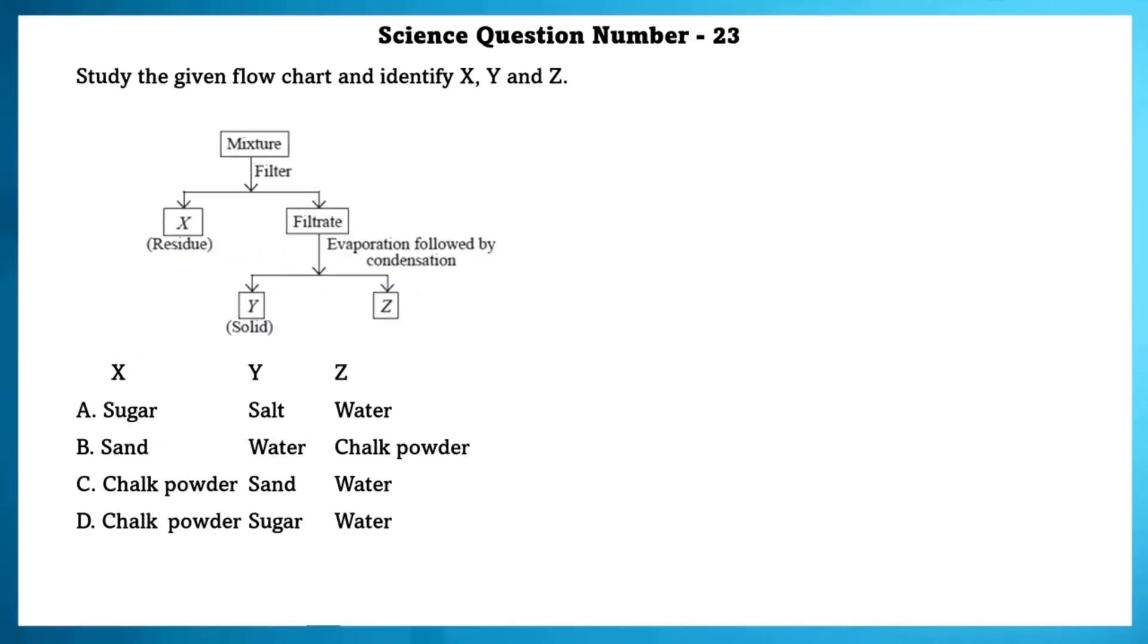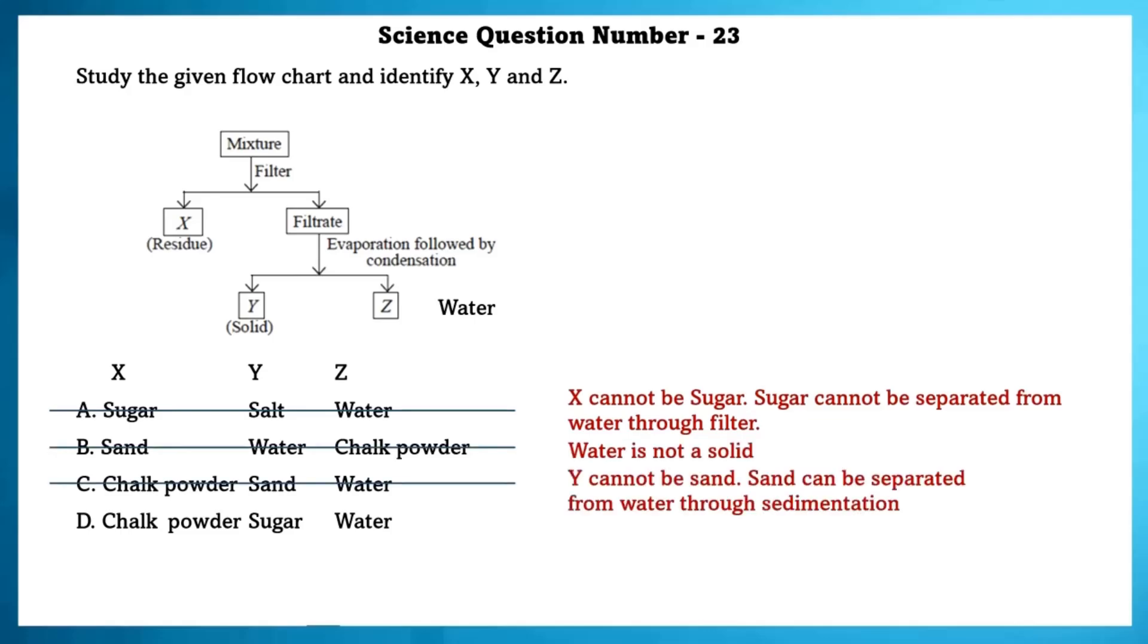Science question number 23. Study the given flow chart and identify X, Y and Z. Clearly, Z is water. X cannot be sugar. Sugar cannot be separated from water through filter. In the B option, cannot be the correct option because water is not a solid. C option cannot be the correct option because Y cannot be sand. Sand can be separated from water through sedimentation.